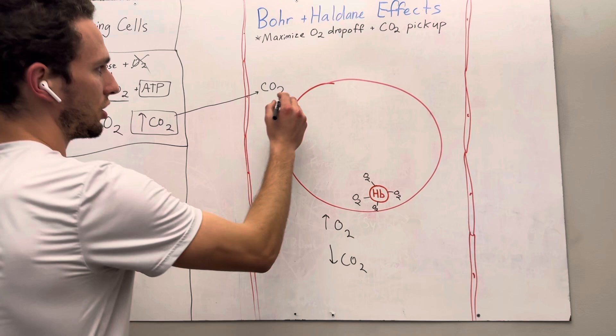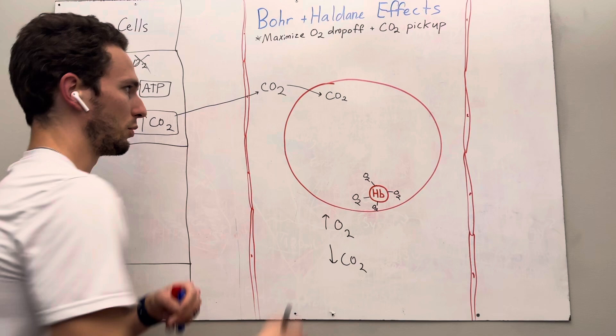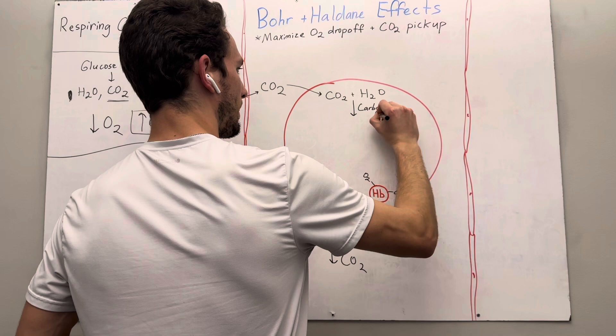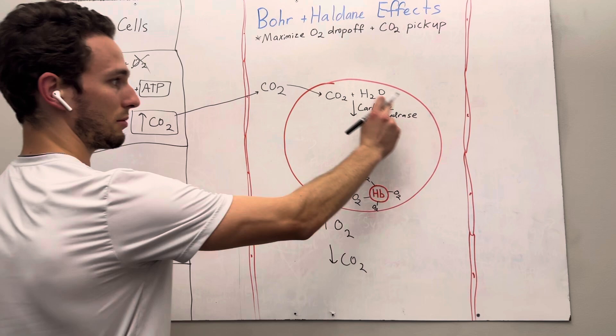This carbon dioxide is going to go into this red blood cell. So the CO2 is in the red blood cell, and it's going to combine with a very common molecule, water. When this happens, there's going to be an enzyme in your red blood cell called carbonic anhydrase. This is just an enzyme that's dealing with water and a carbon molecule. ACE means enzyme, carbonic anhydrase.